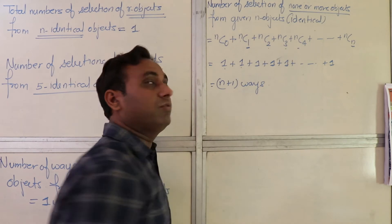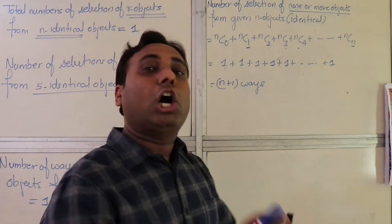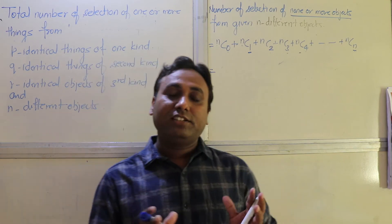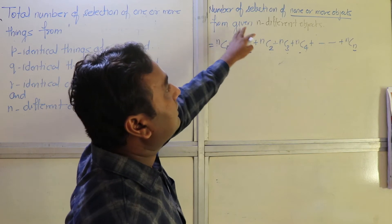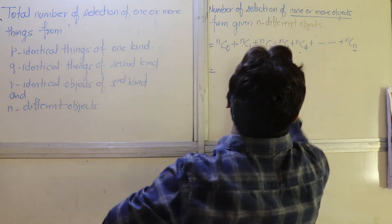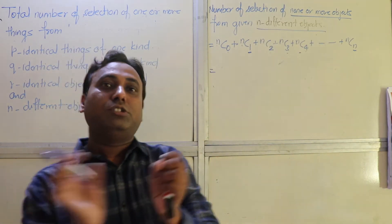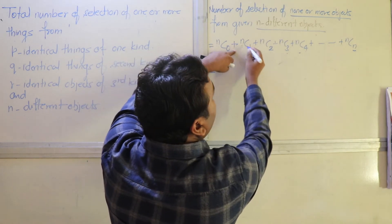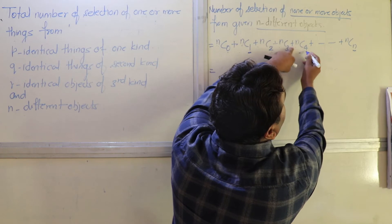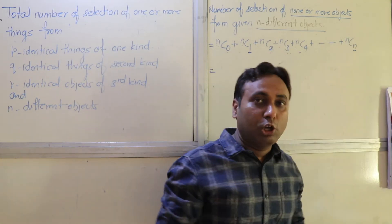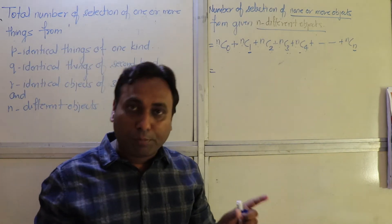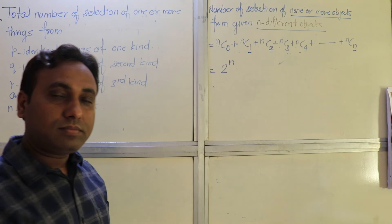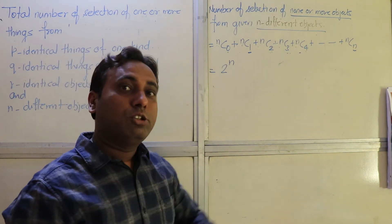So n plus one ways of selecting none or more objects from n identical objects. Now we will see how to select none or more objects from n different objects. These objects are all different — none of them are identical. If you have learned the binomial theorem properly, you would know that the addition of selecting none, one, two, three... all the way to n objects from n different objects gives 2 raised to n.